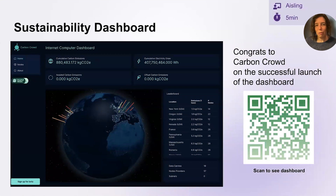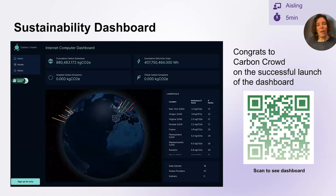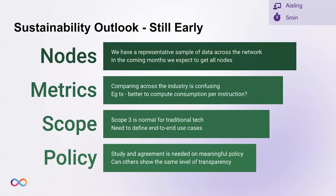As Kyle mentioned on Twitter, if you haven't spent five minutes twirling this globe, you're not doing it right. I urge you to scan the QR code, take a look at the dashboard, twirl the globe, and see where it's green at the moment. Everything you see here is the real-time energy consumption. We now have representative samples of nodes reporting their data — at least one in every subnet of the IC reporting how much energy they're consuming every minute. In the coming months, we hope to get all nodes reporting, so we have a full, transparent picture of what is being consumed on the Internet Computer minute by minute.